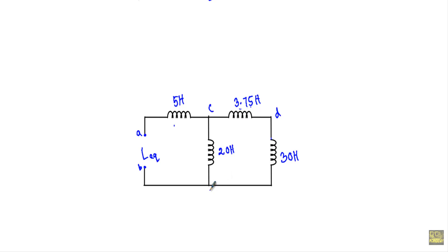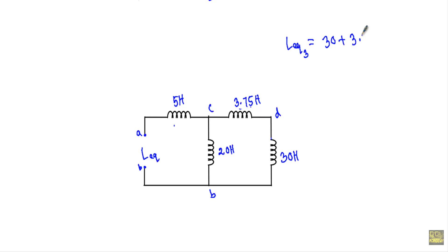Now look between terminal C and B — the 30 henry and 3.75 henry inductors are connected in series. I can replace them with L equivalent 3, which will be equal to 30 plus 3.75, equal to 33.75 henry.